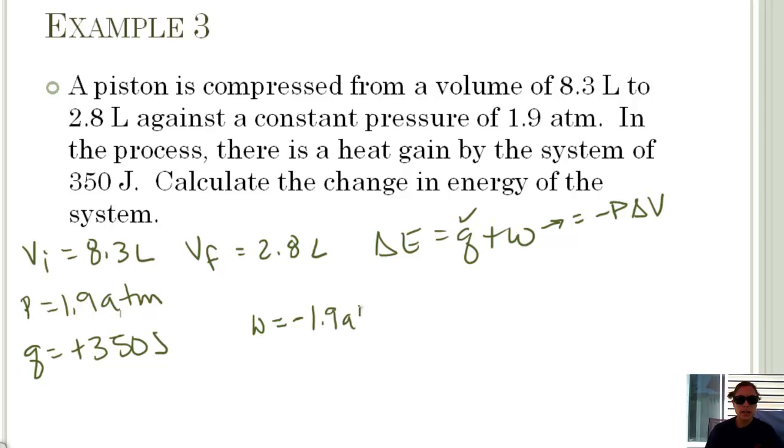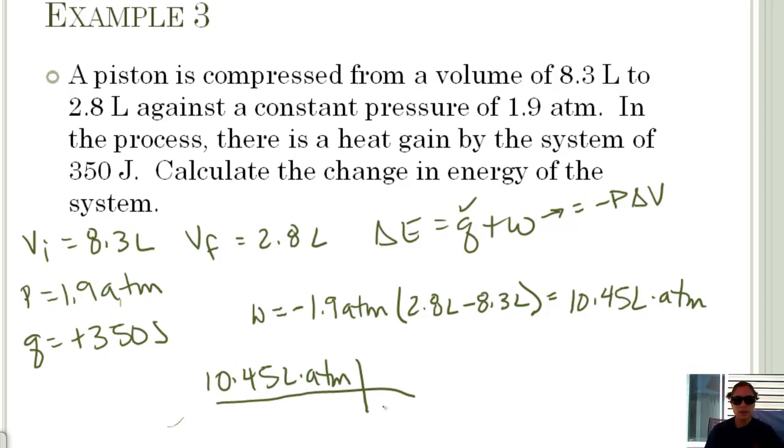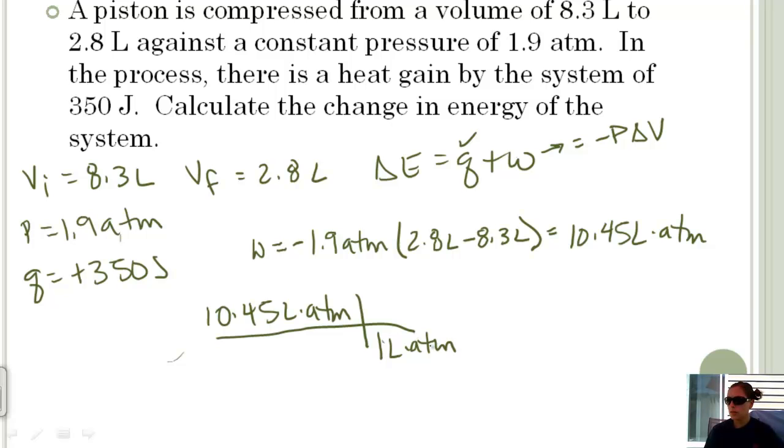W equals negative P, which is 1.9 atmospheres. Delta V is always final minus initial, so 2.8 liters minus 8.3 liters. I've calculated this out—it's 10.45. But the problem is we can't put our units together because Q is in joules and this is liter atmospheres. So now we need to convert from liter atmospheres to joules. 10.45 liter atmospheres, I know that for every 1 liter atmosphere, there's 101.3 joules. That comes out to 1058.585 joules. We'll do significant figures at the end.